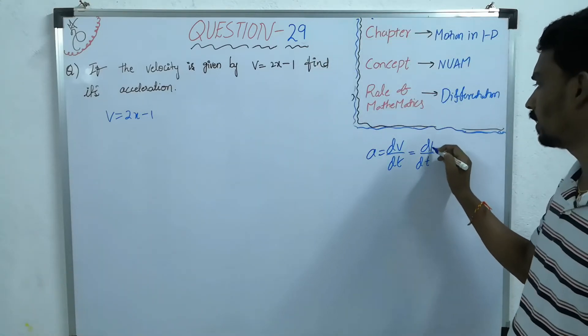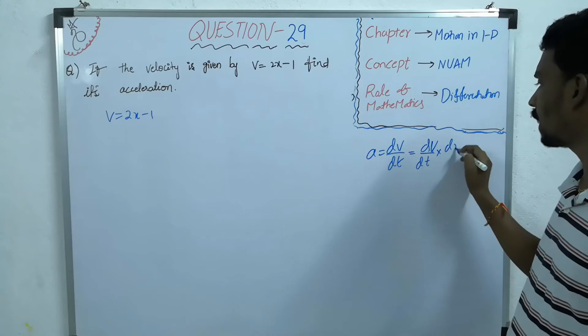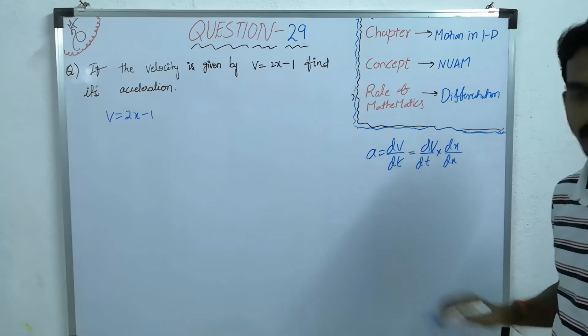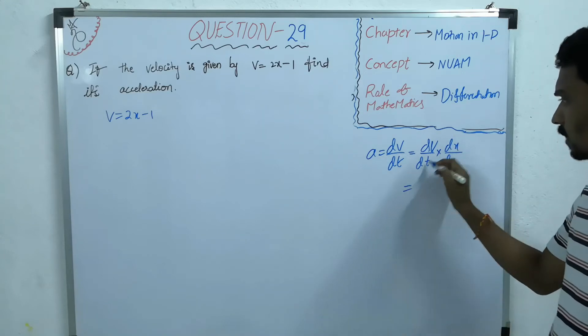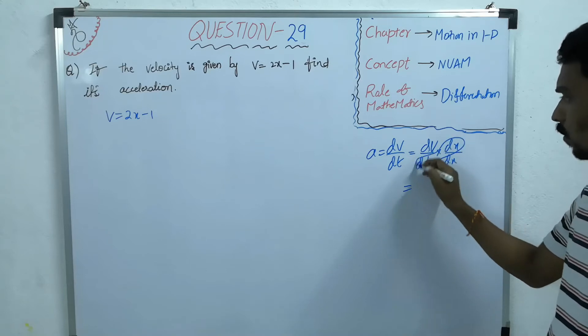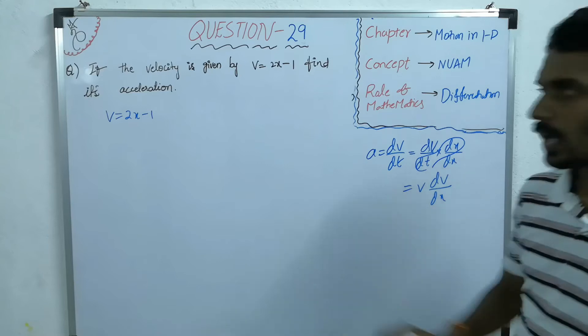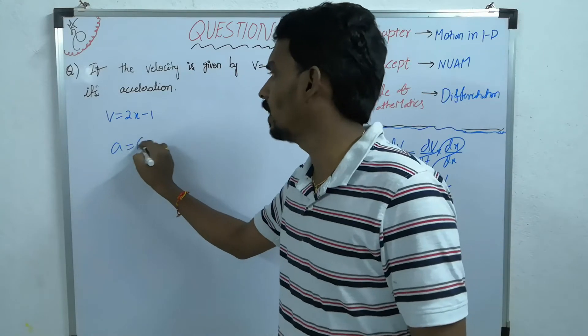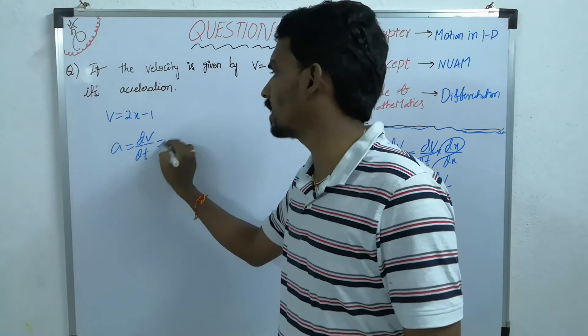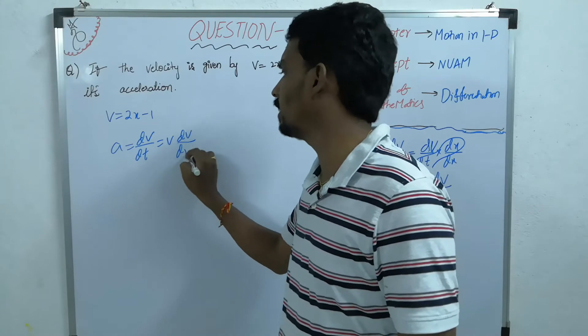d by dt. You will multiply with dx. Divide with dx. Then, dx by dt is velocity v into dv by dx. So, acceleration is nothing but dv by dt is nothing but v dv by dx.